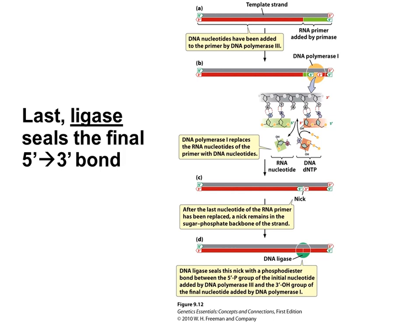After DNA polymerase 3 extends the new strands and DNA polymerase 1 comes back and replaces the RNA primers with DNA, there will be some phosphodiester bonds that need to be formed to connect all the pieces into one continuous new strand of DNA. That enzyme is called ligase. Ligase seals any remaining 5' phosphate to 3' hydroxyl phosphodiester bonds that still need to be made. Once that's done, you have a complete strand.